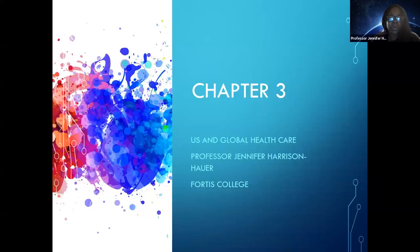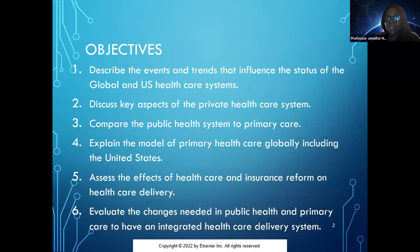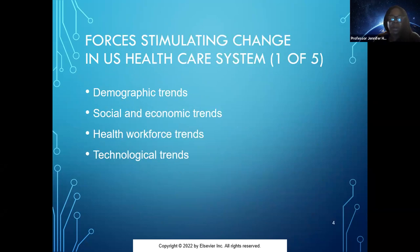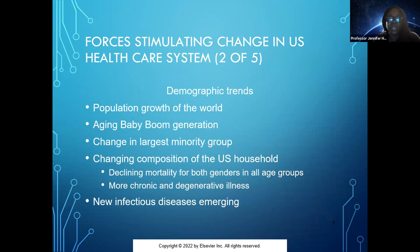Now going into US and global health care. This chapter gets into the health care system — how it has transitioned, struggled, and everything it has gone through — including demographic trends, social and workforce trends, and technology trends. When looking at population, the greatest growth is in undeveloped countries, with decreased growth in the United States and other developed countries as the US total fertility rate has actually declined. Our baby boomers are getting older.